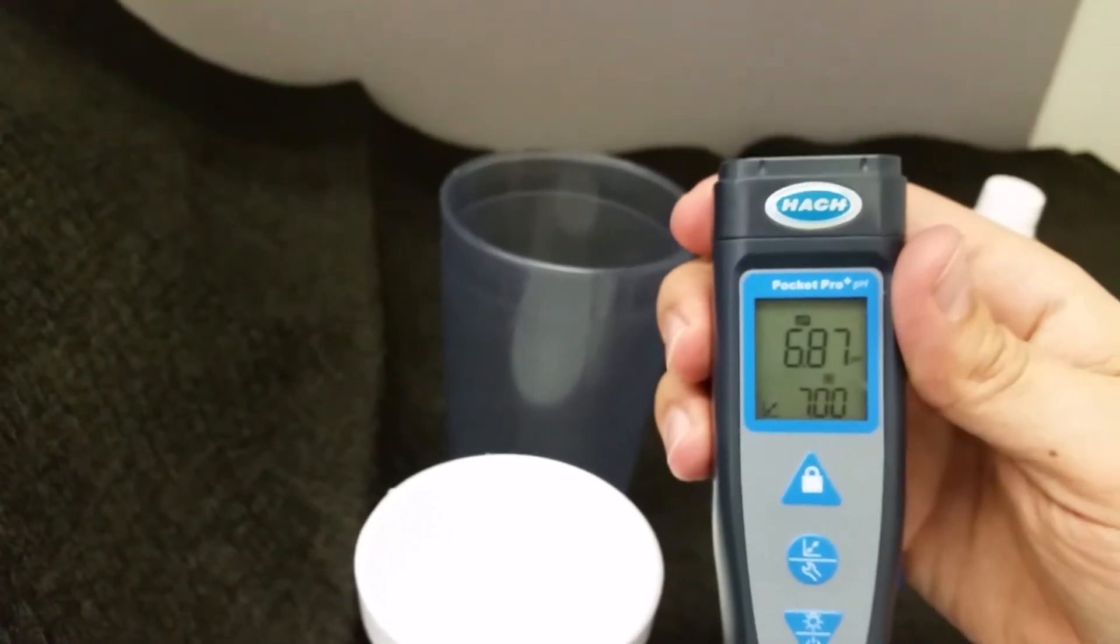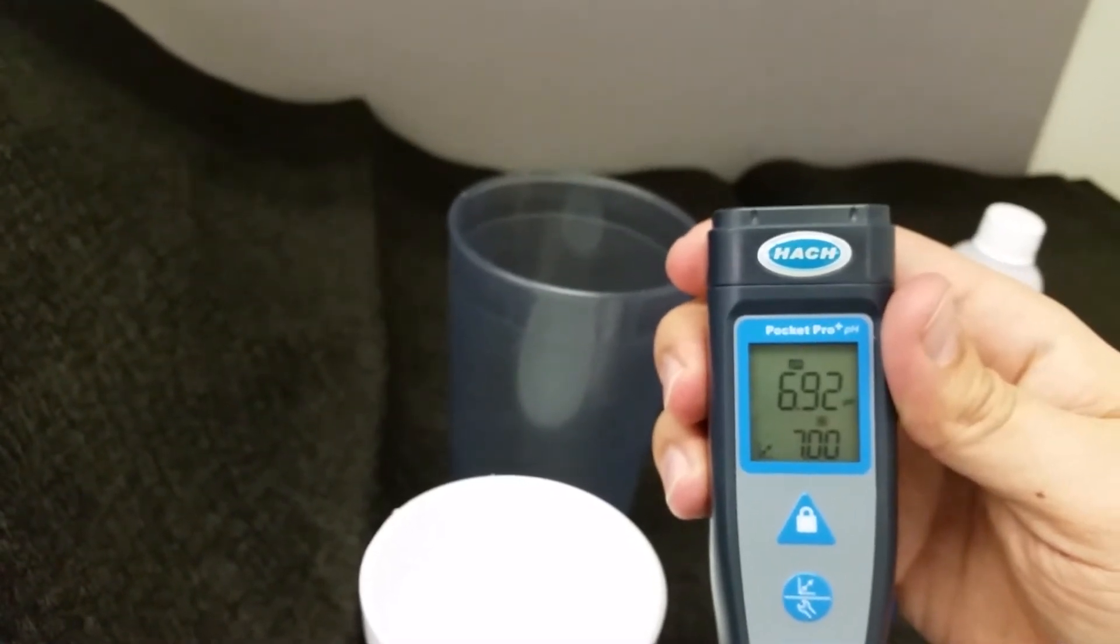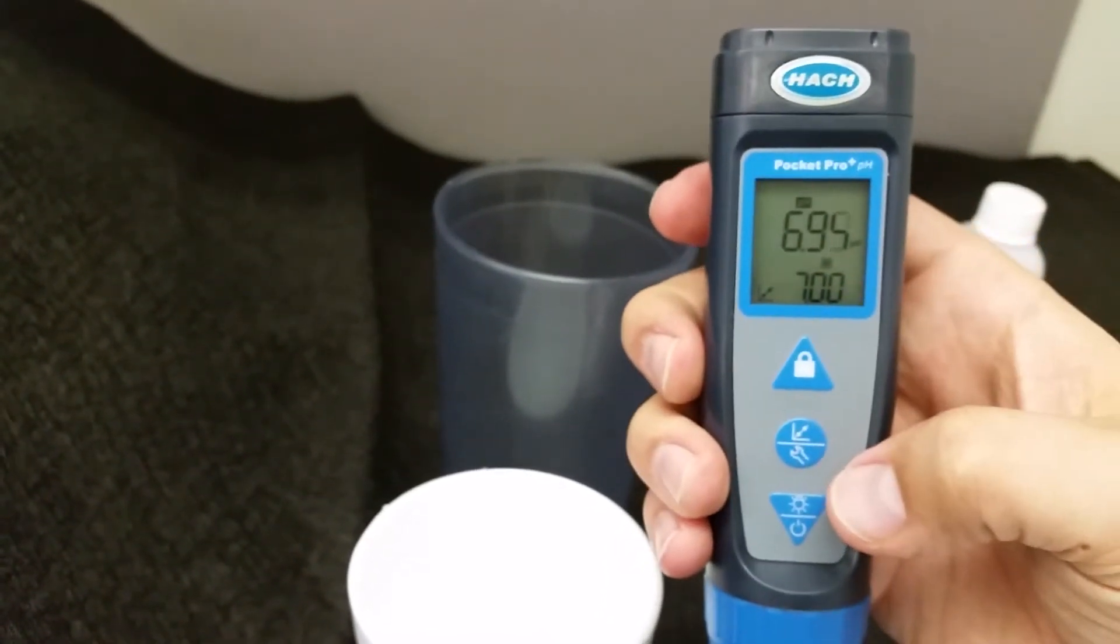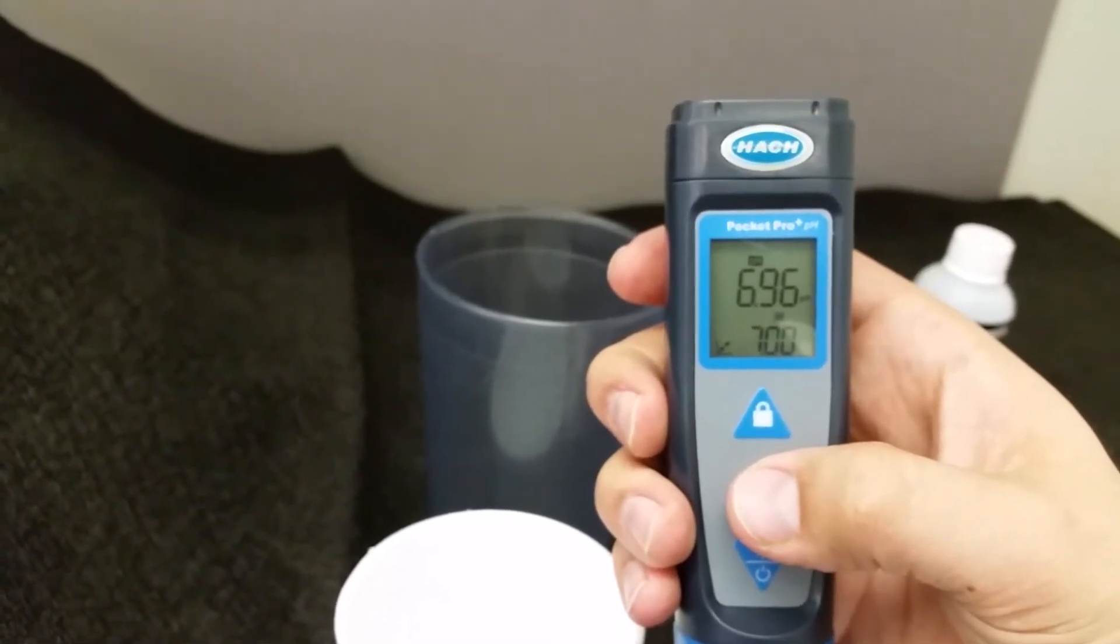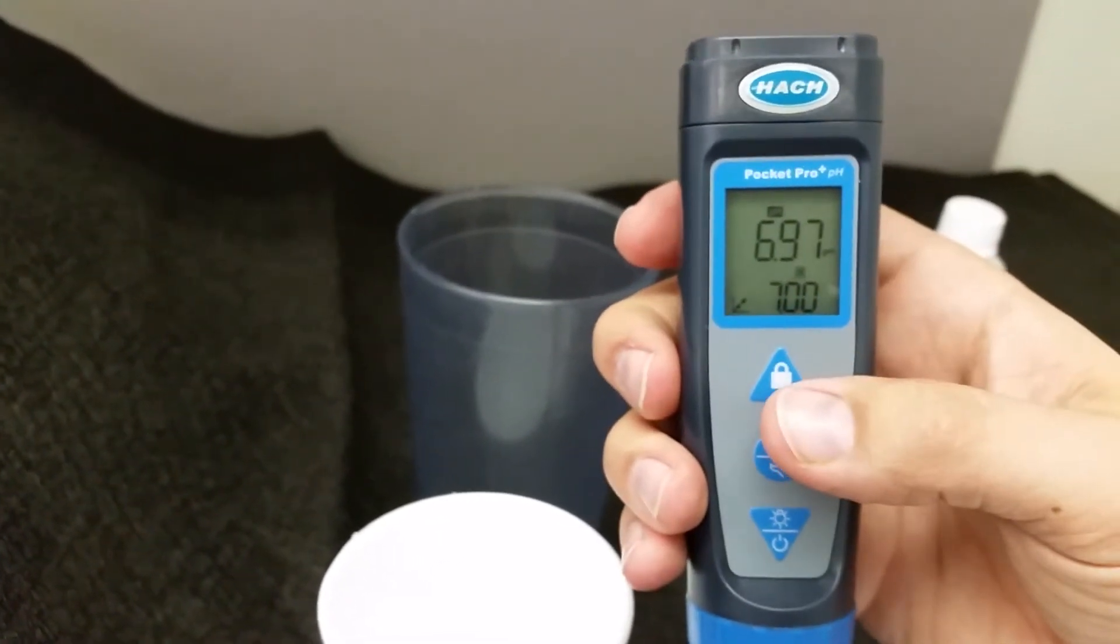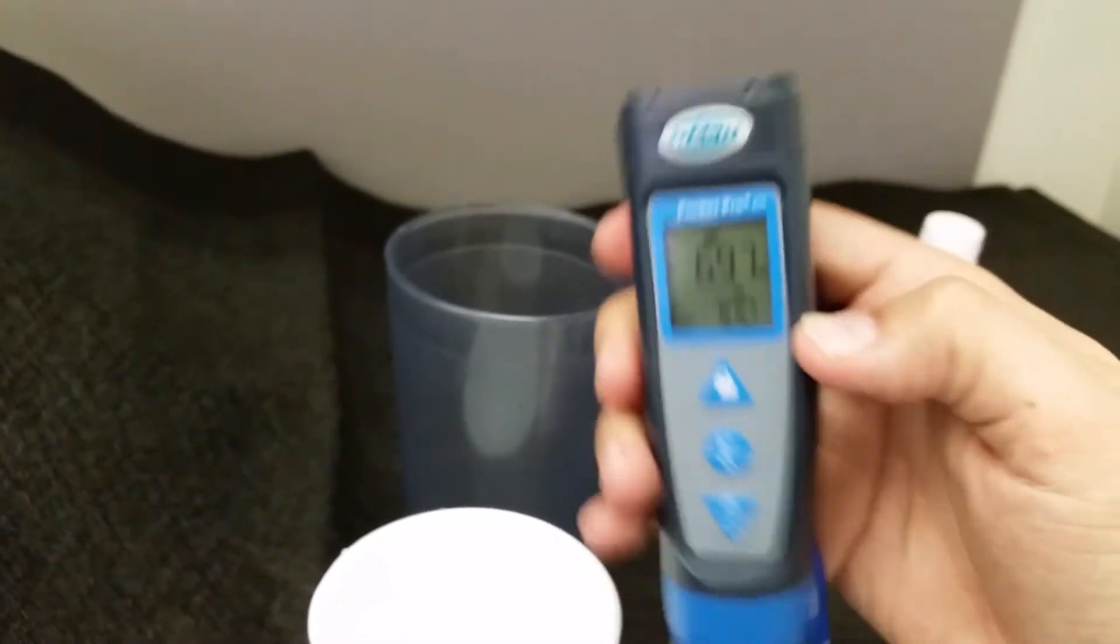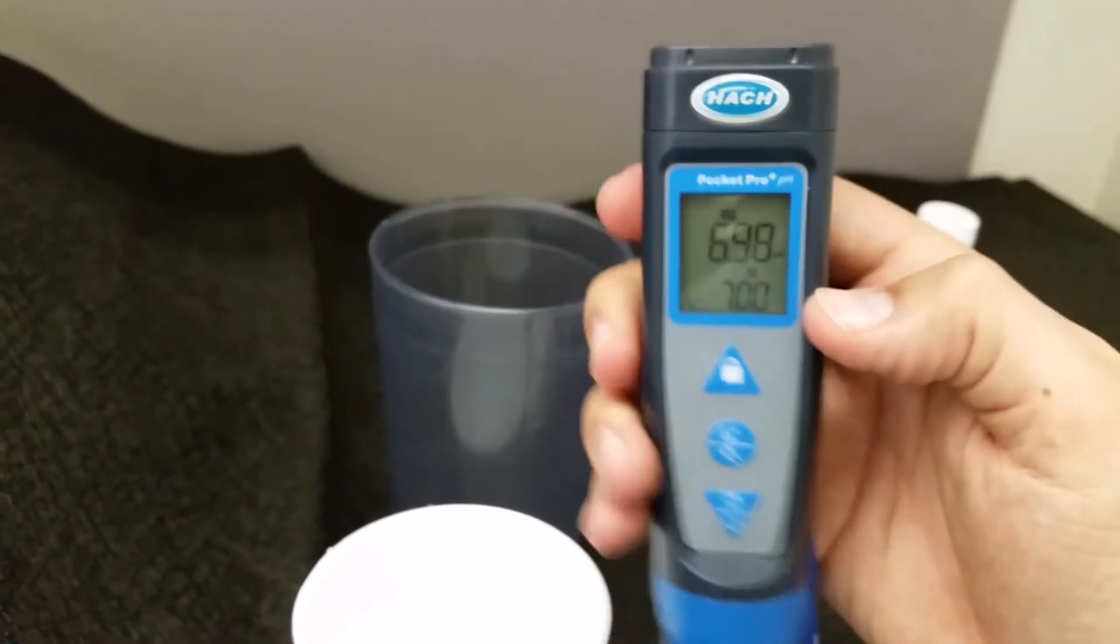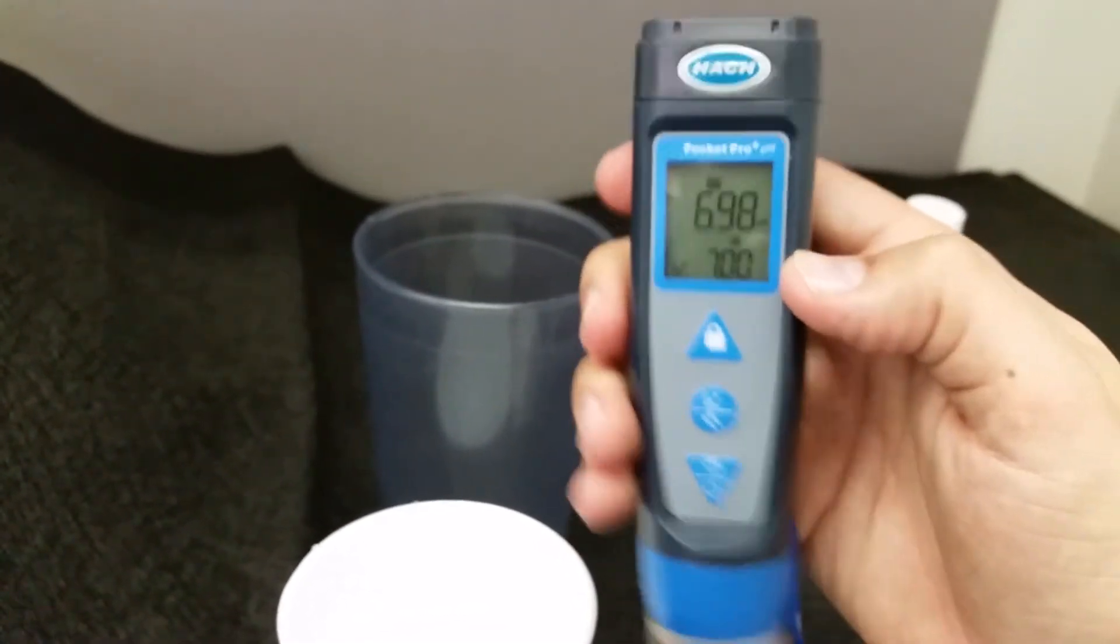Once it's fully into the cap, when the measurement is stable, you push the calibration button to save the measurement. It's almost there, 6.95. It should be at 7. Almost there, come on.